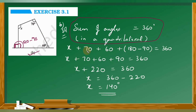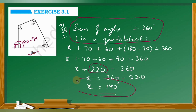So x plus 70 plus 60 plus (180 minus 90) is equal to 360. That gives x plus 70 plus 60 plus 90 equals 360. 70 plus 60 is 130, and 130 plus 90 is 220. So x plus 220 is equal to 360. Transposing: x is equal to 360 minus 220.